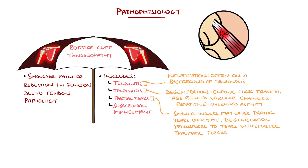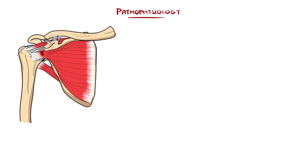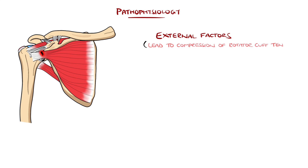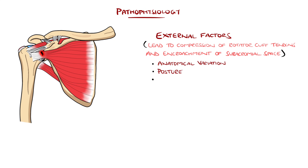Though the definitive mechanism for rotator cuff tendinopathy is not fully understood, it is thought to have a multifactorial etiology with external and internal factors. External factors lead to compression of the rotator cuff tendons, particularly the bursal side of the tendon, and encroachment of the subacromial space. Examples can include anatomical variants of the acromion or related structures, as well as posture and muscle deficits.